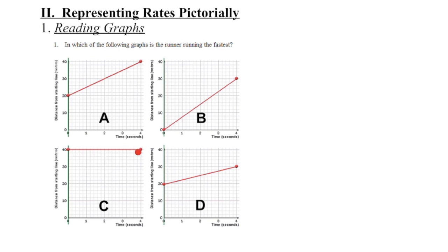Time is passing, the distance did not change, and remember a horizontal line has a slope of zero. This person is not moving at all as time is passing, so they're not going to be going the fastest.